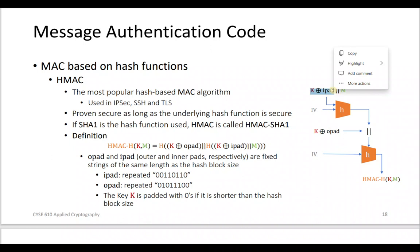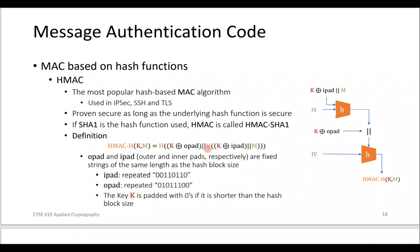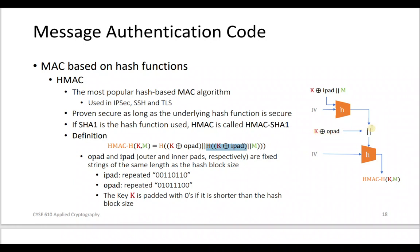First, we have K XOR ipad (inner pad) concatenated with M1, hashed with a fixed IV. This outputs the hash of (K XOR ipad). That hash is then concatenated with K XOR opad. Finally, we hash all of this with a fixed IV to produce the output tag.